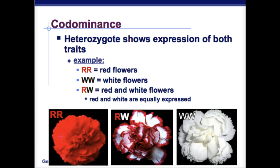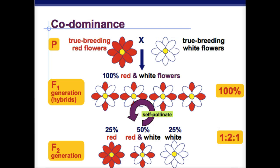Another kind of dominance is called co-dominance. This is when the heterozygote appears to have both traits. So when you combine the red and the white, you have red and white both present. With big R big R you'll get red, and with big R big W you'll get red and white. Looking at the true breeding parents, you have the parent generation with homozygous red and homozygous white, and when blended to the first generation, you get 100% red and white.